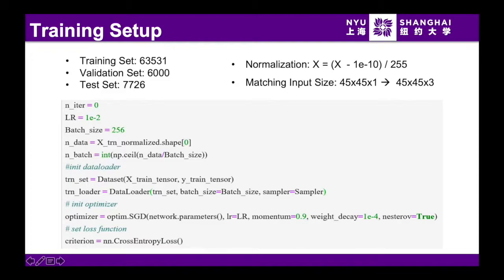Then we set up hyperparameters for the training. We use mini-batch gradient descent with batch size 256 with PyTorch SGD optimizer with momentum of 0.9, weight decay of 1e-4, and Nesterov method.